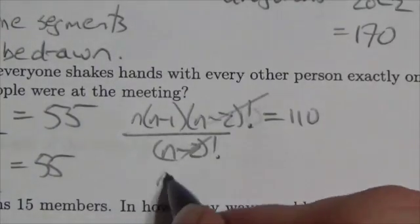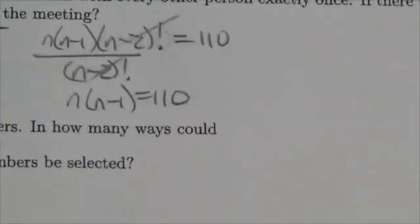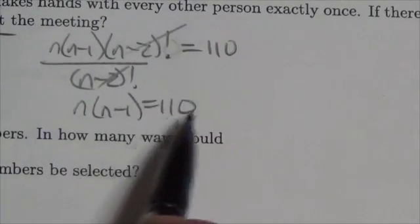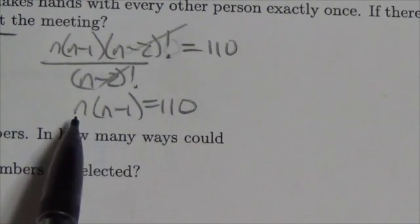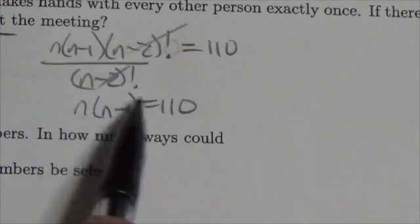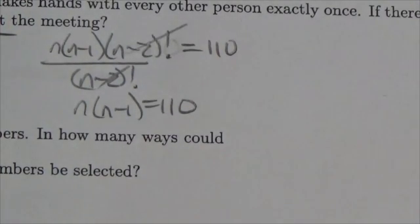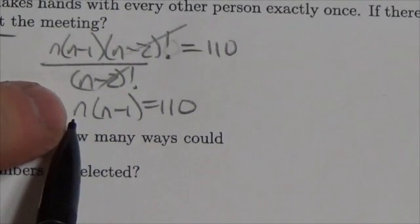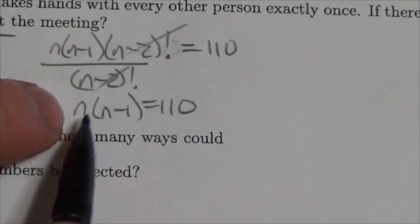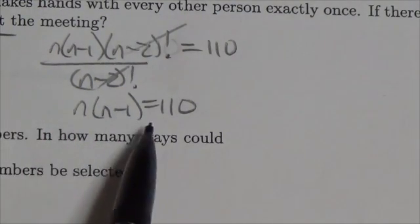So I'm going to be left with n times (n minus 1) equals 110. Now when I think about my factors of 110, just look at this pattern here—this is saying that some number multiplied by a number one less than it is 110. So if you think about your factors of 110, I'm hoping it's fairly clear that that number n must be 11. This has got to be 11 times 10.